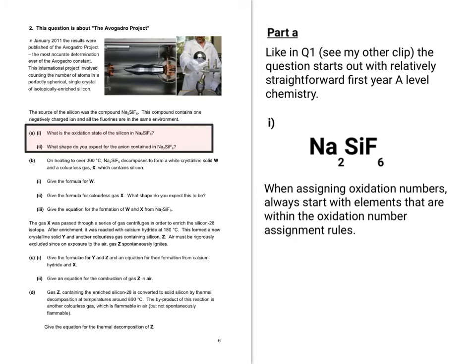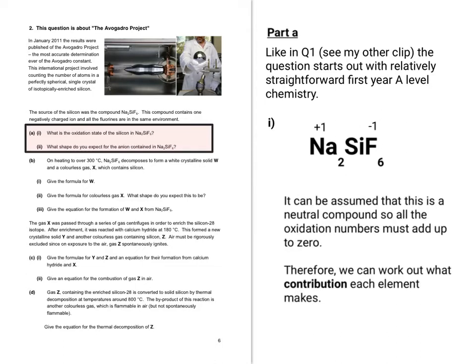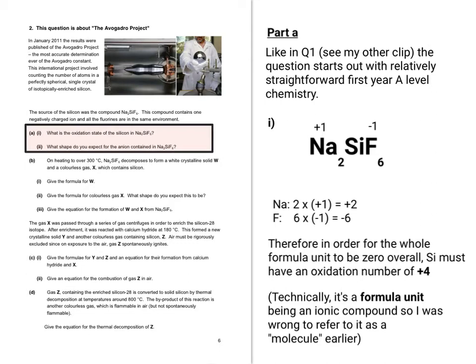As always when doing oxidation states, you need to work out first of all what the oxidation numbers are for the elements that fall within the oxidation number assignment rules. In this case, we can assign minus 1 to fluorine and plus 1 to sodium. We can assume that sodium-silicon-hexafluoride is a neutral compound, so all the oxidation numbers must add up to zero overall. We can work out what contribution each element makes. In order for the whole thing to add up to zero, silicon must have an oxidation number of plus 4.